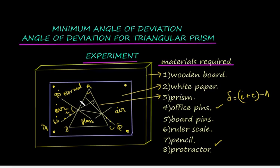After fixing the pins, the prism is removed and the pins are also removed. This line is marked and a normal is drawn at this point. When these two lines are extended properly, you get the angle of deviation. This is how the angle of deviation is experimentally determined — in the case of a prism the ray undergoes deviation.